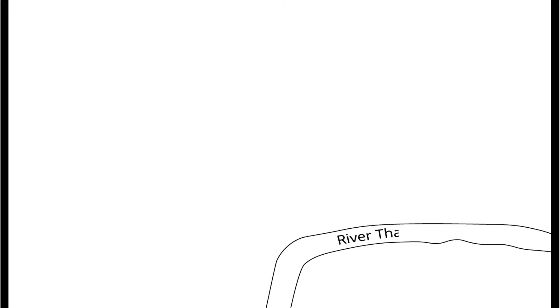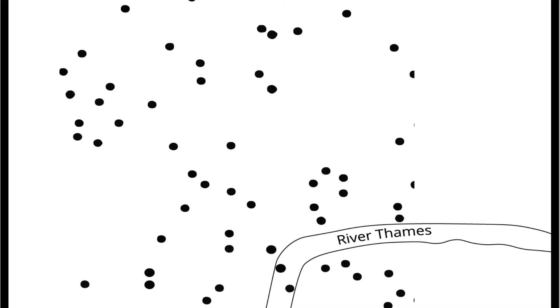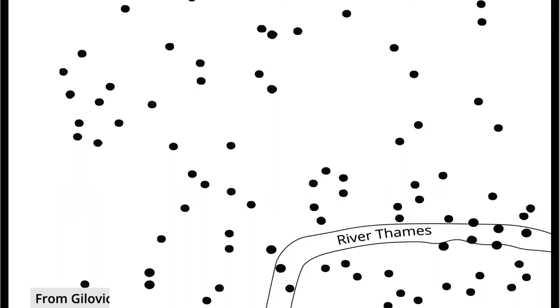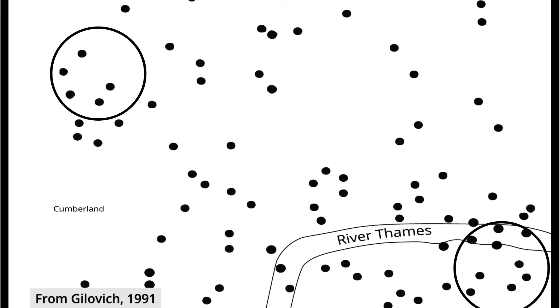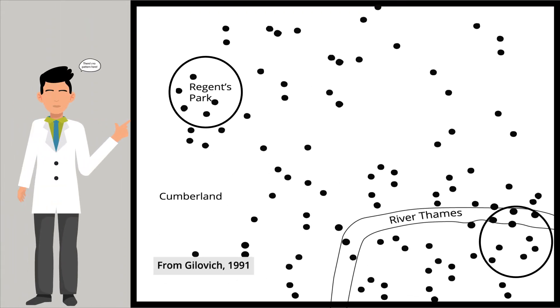Thomas Gilovich, the psychologist who ran the statistical analysis of the bombing locations, credited the Londoners' sense of being targeted to the clustering illusion. The clustering illusion occurs when similar data points within a random sample appear to be in clusters, seemingly indicating a correlation. It is not uncommon for data points to aggregate in certain areas.